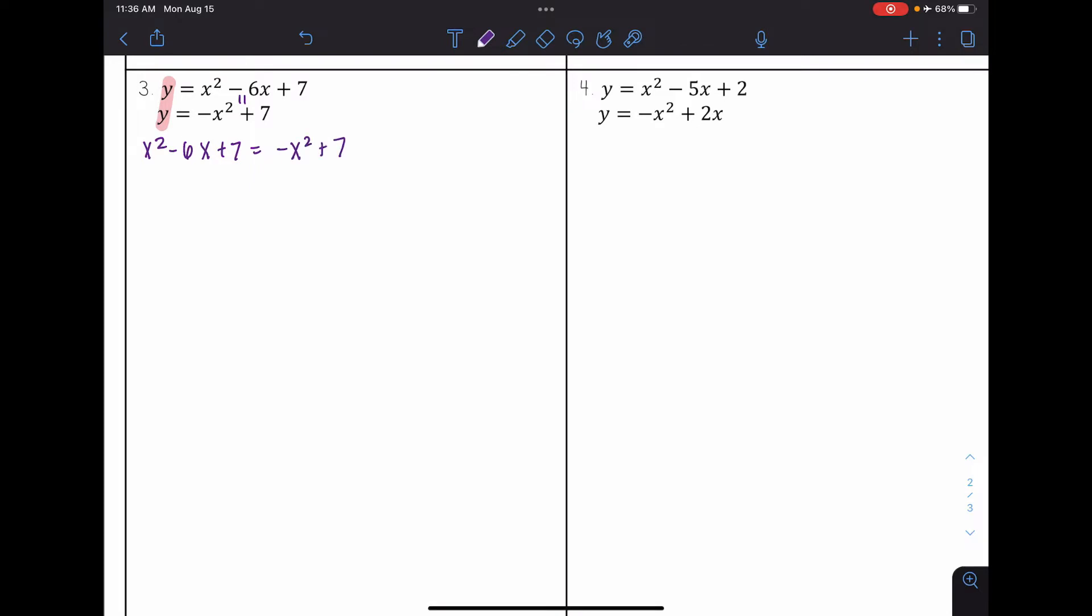I want everything to be on one side, so I'm going to add x squared and subtract 7 to both sides. And so I get 2x squared minus 6x, 7 minus 7 that cancels out, is equal to 0.